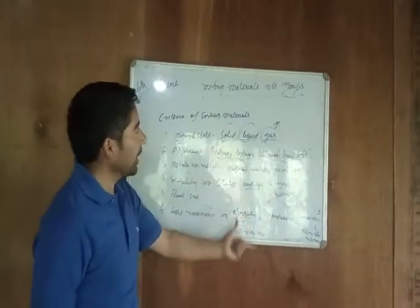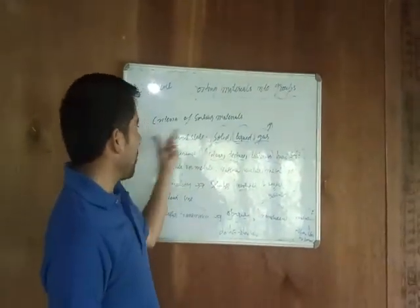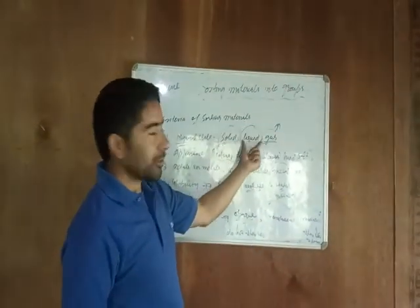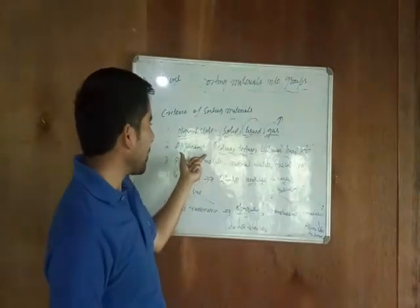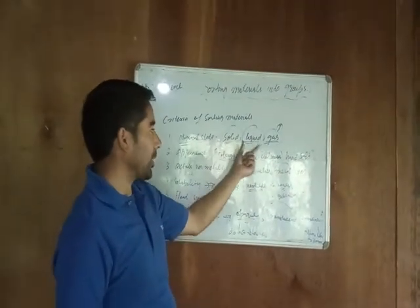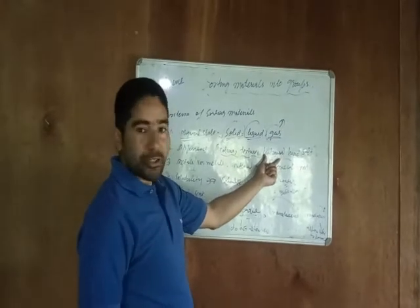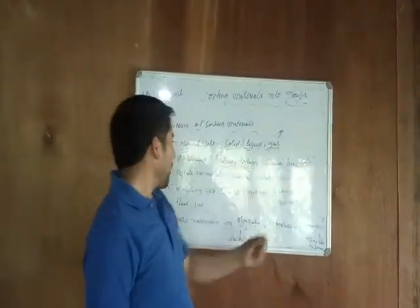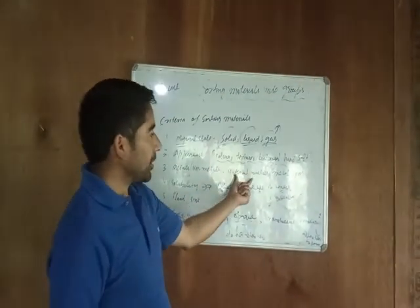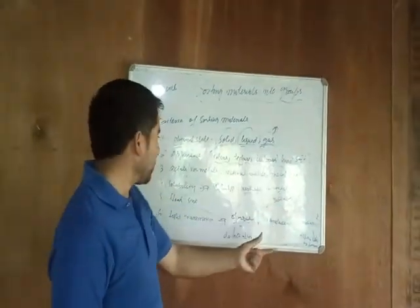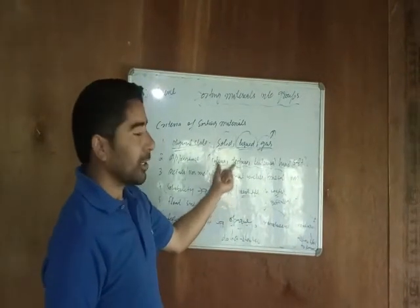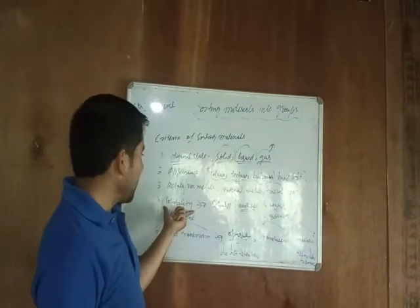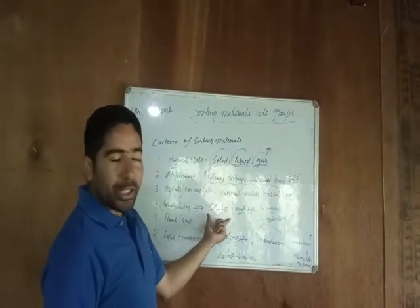So on these criterias we can sort the materials into different groups. Number one is physical state — we check whether the material is a solid, a liquid, or a gas. Number two is appearance — we check the color, texture, and luster. Number three, we check whether the material is a metal or a non-metal.